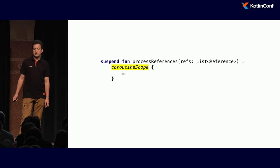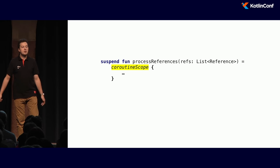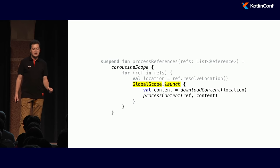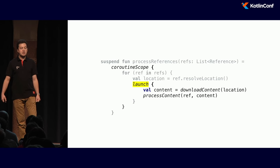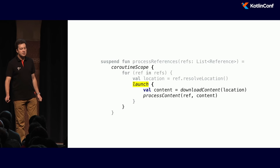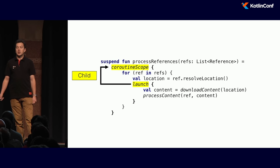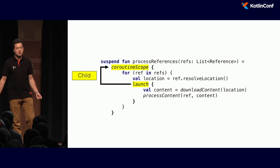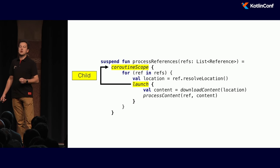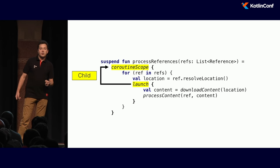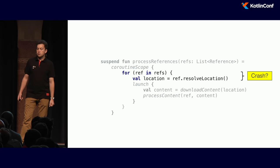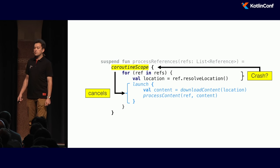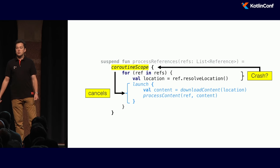We use a function called `coroutineScope`. `coroutineScope` delimits this kind of parallel work — it does something and has to wait for its result. Inside, we put our code inside the `coroutineScope`, and instead of using `GlobalScope.launch`, we just say `launch`. That does the magic trick. Now this `launch` becomes a child of this scope — it is bound to this scope instead of being run globally like threads. We now have a child coroutine, a concept we don't have with threads. How does it help us?